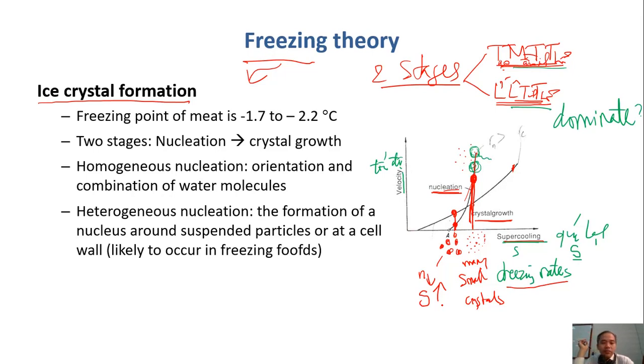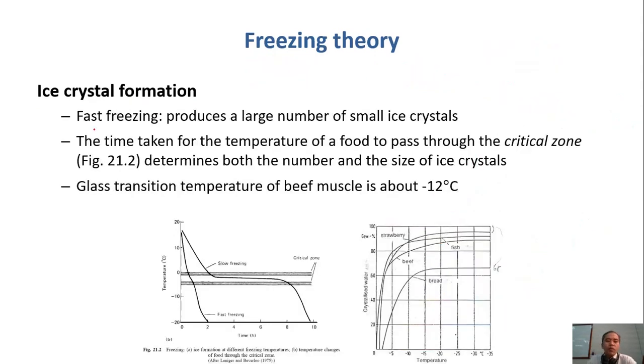When we do fast freezing, we produce a high number, large number, of small ice crystals. This is fast freezing. This is slow freezing. When we do slow freezing, it takes a substantial amount of time, long time, for the food to go down from zero to minus five.